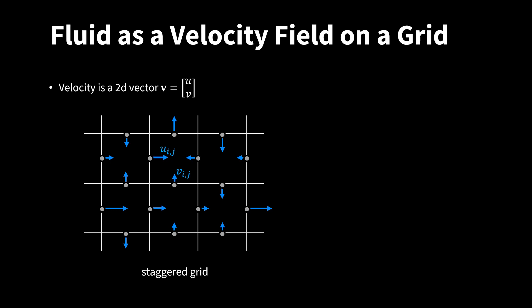In two dimensions, the velocity has two components, u and v. We are going to use a staggered grid. In this grid, the two velocity components are not stored in the same location. The horizontal component u is stored at the center of the vertical faces. The vertical component v is stored at the center of the horizontal faces.